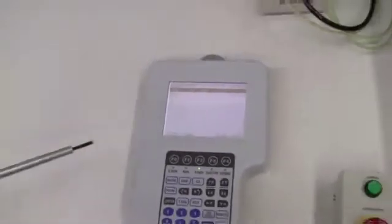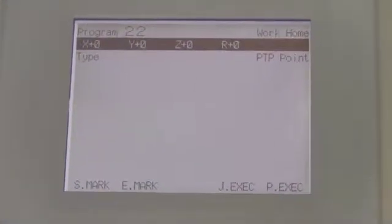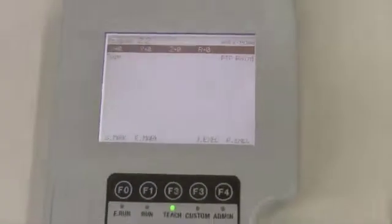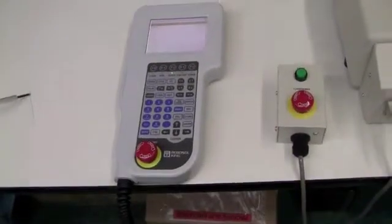And next to that we have our teaching pendant which all of our program XYZ rotational position data is entered and saved here. All of our soldering condition data, speed and feed amounts of the solder are stored here. And we also set our temperature for our soldering iron. All done through the teach pendant.